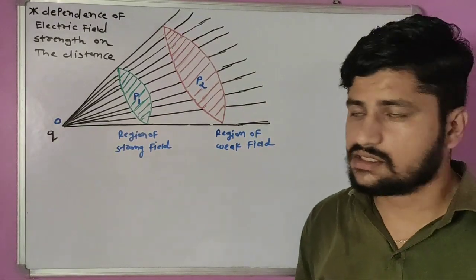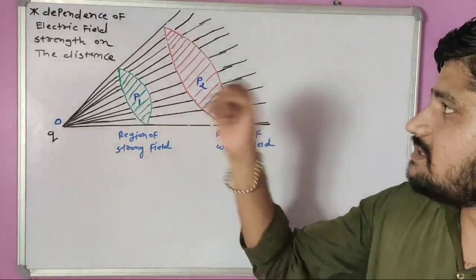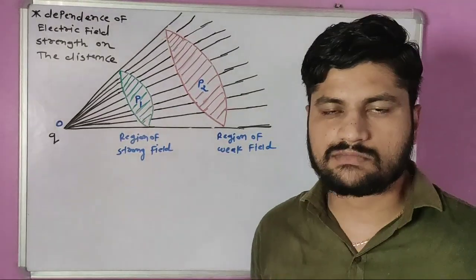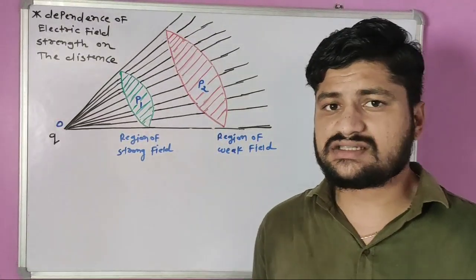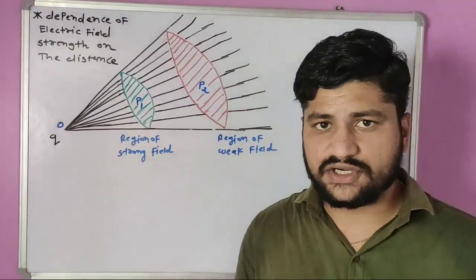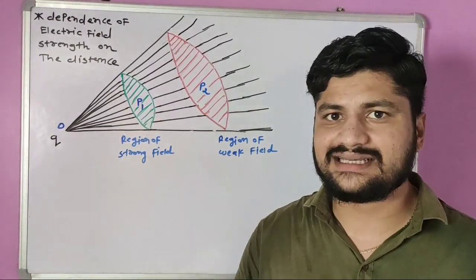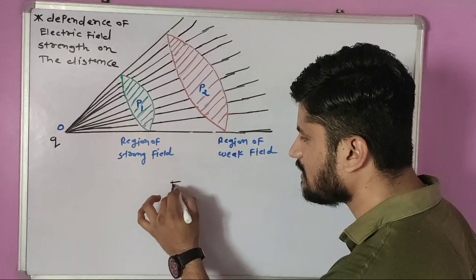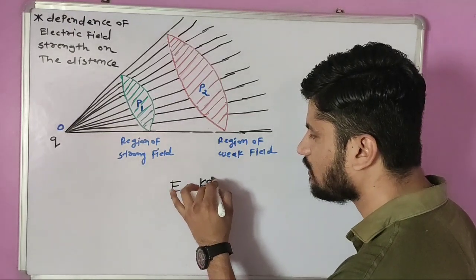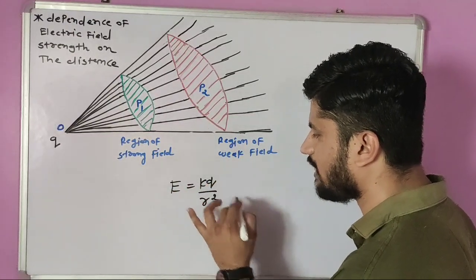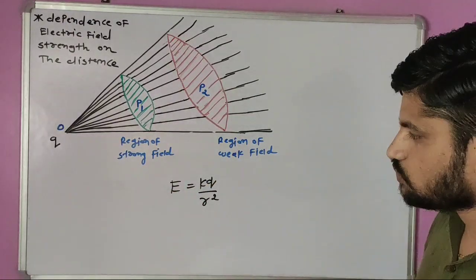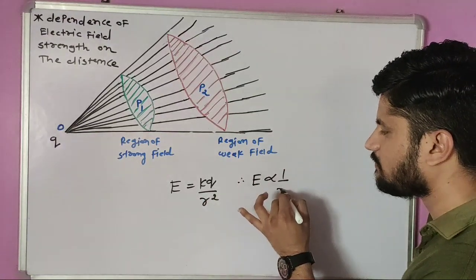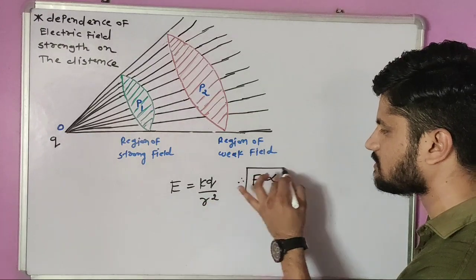Dear students, today we discuss the dependence of electric field strength on the distance. We know that the electric field due to a point charge at a distance r is given by E = kq/r². So we can say that the electric field E is inversely proportional to the square of the distance.